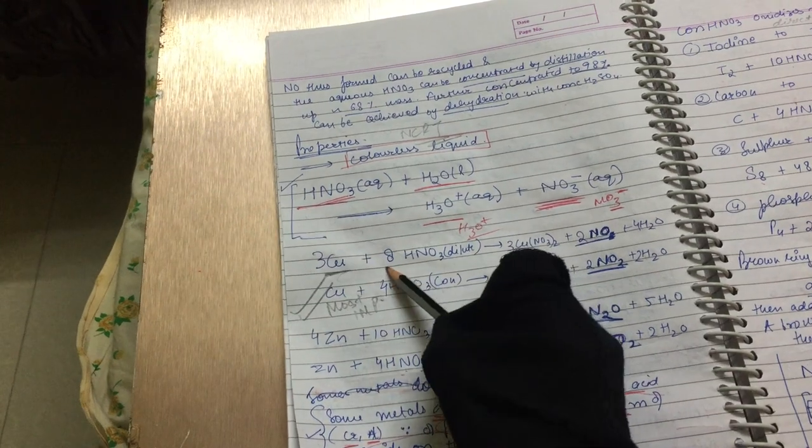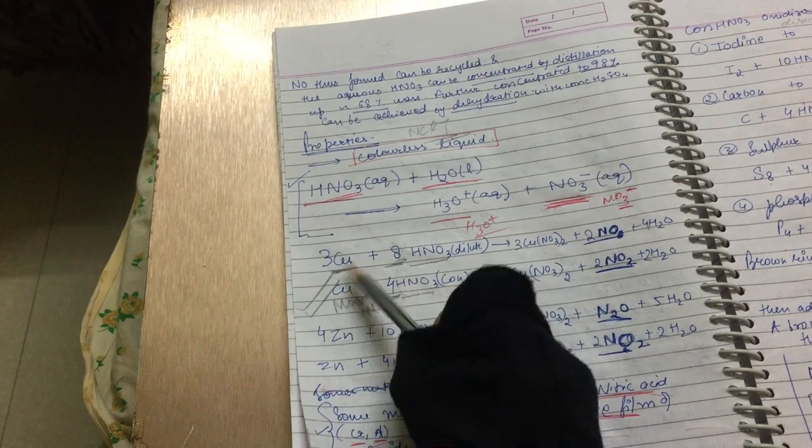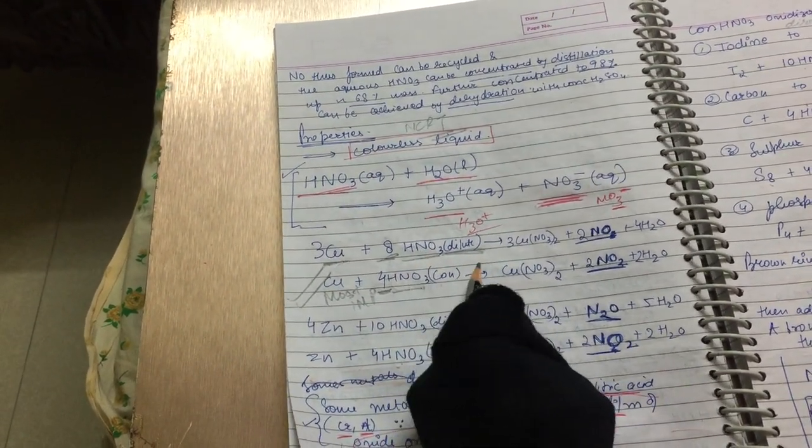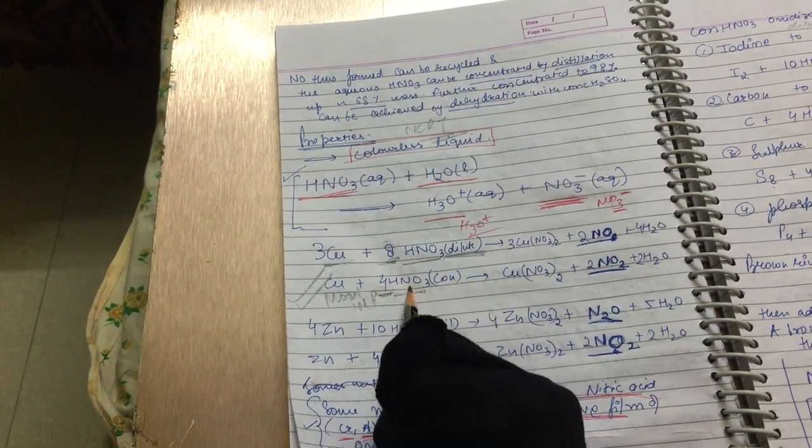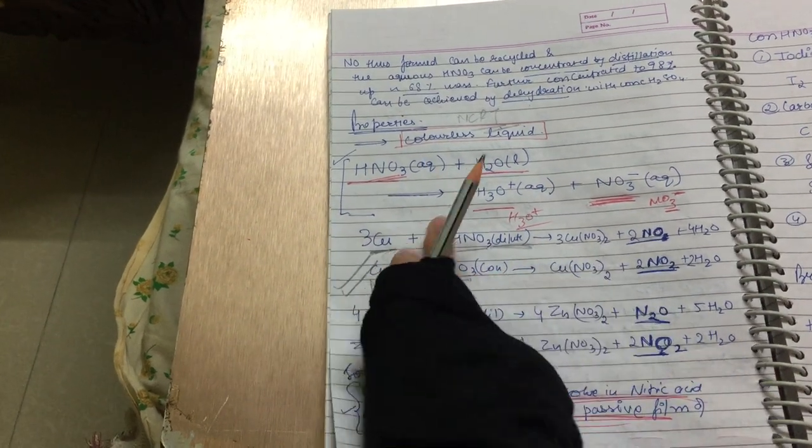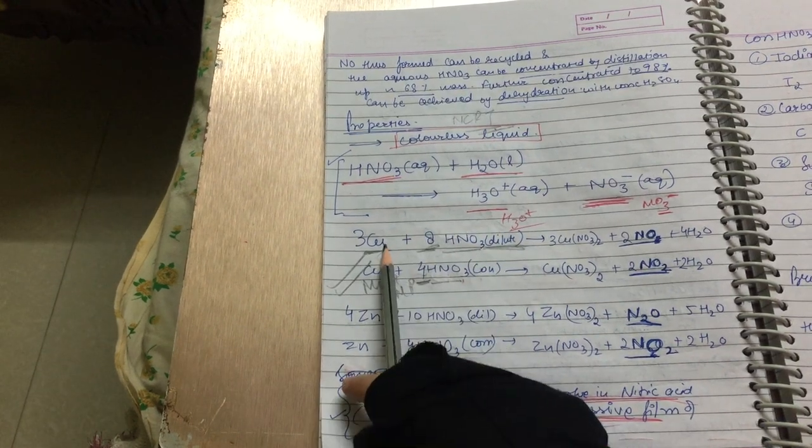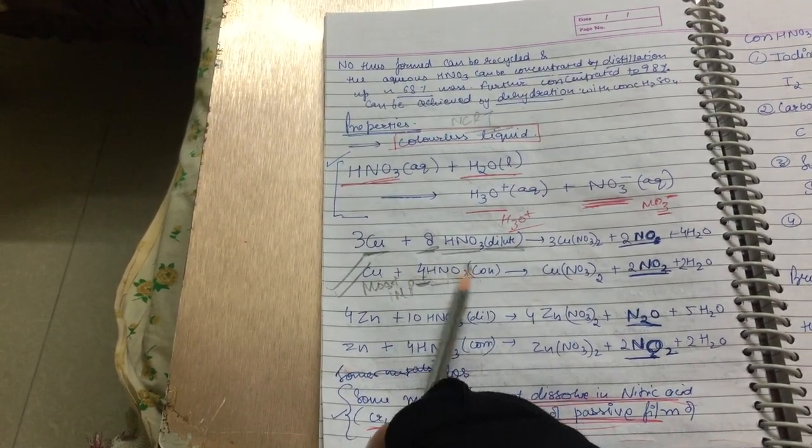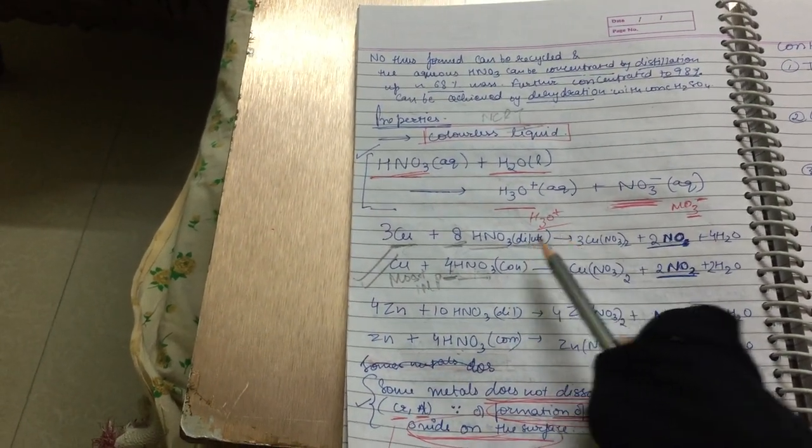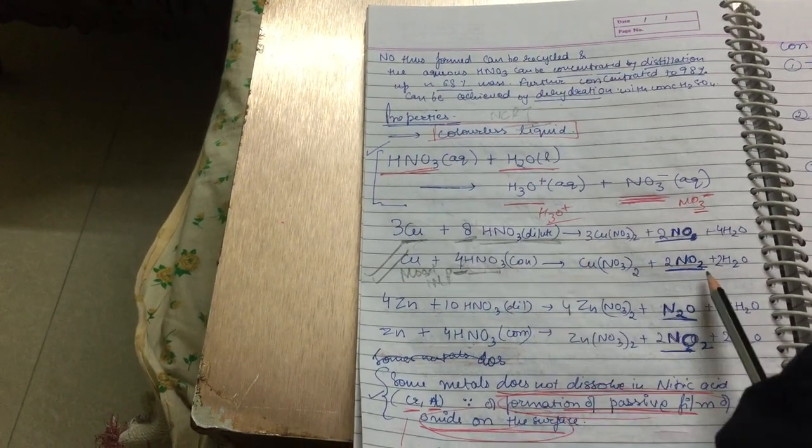Sometimes we add copper with 8 HNO3 and sometimes 4 HNO3. It is also not given. So basically, we ask that we will add copper with dilute, then what will happen? And with conc, then what will happen? This can also be dilute and conc. Just give the number and confuse it. Or you can ask directly to you if you react with dilute, we will add copper with HNO3 or we will add copper with conc HNO3. So you should know that if we add dilute, then NO will come. And if we add conc, then NO2 will come.